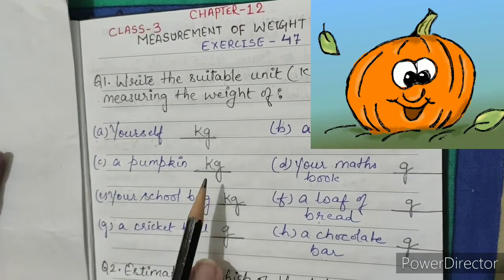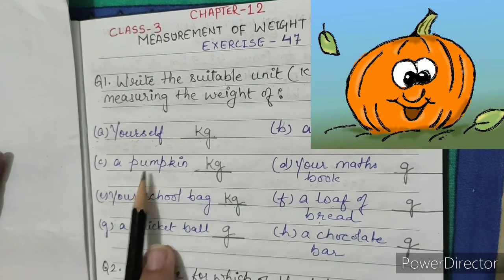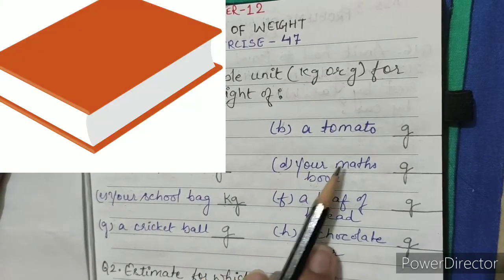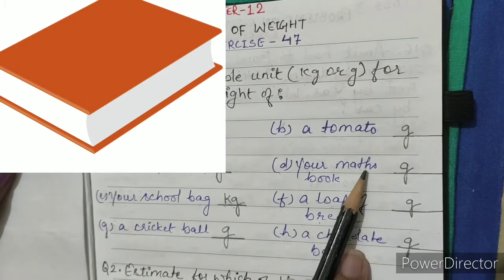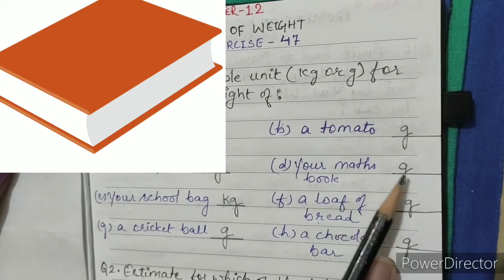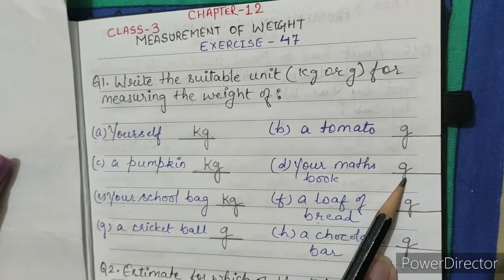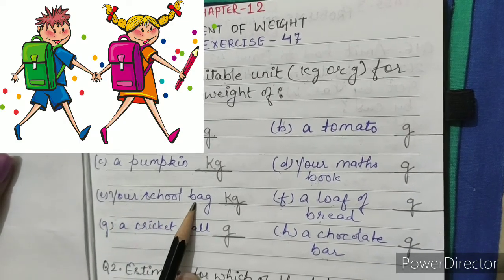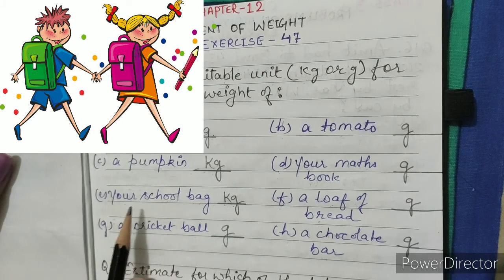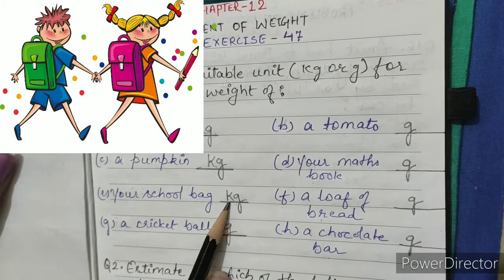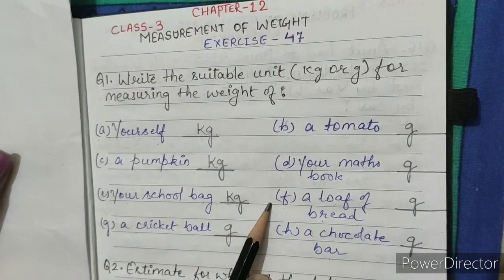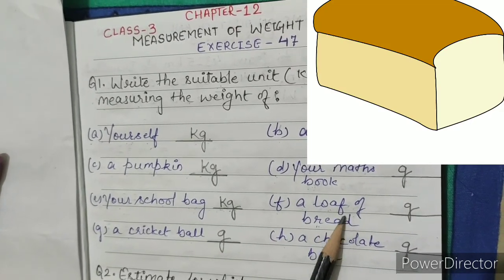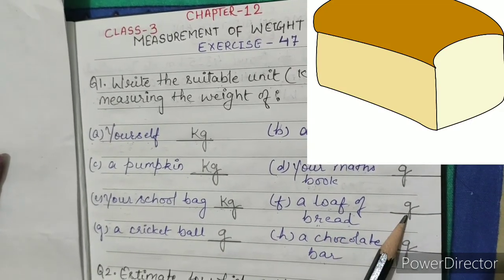C. A pumpkin - measuring the weight of pumpkin in kg. D. Your maths book - we measure maths book weight in gram. E. Your school bag - we measure the weight of your school bag in kg. F. A loaf of bread - we measure the weight of a loaf of bread in g.